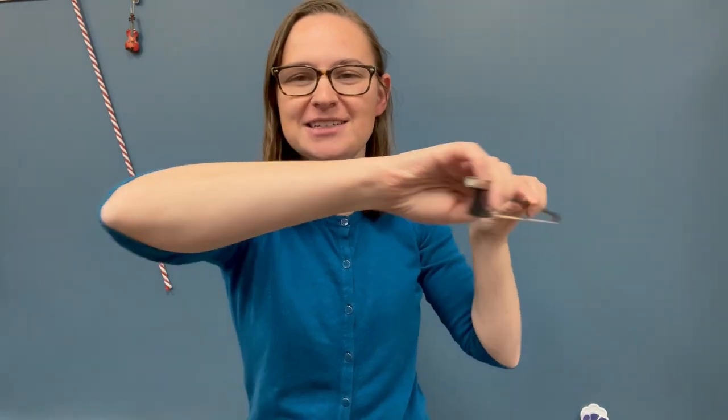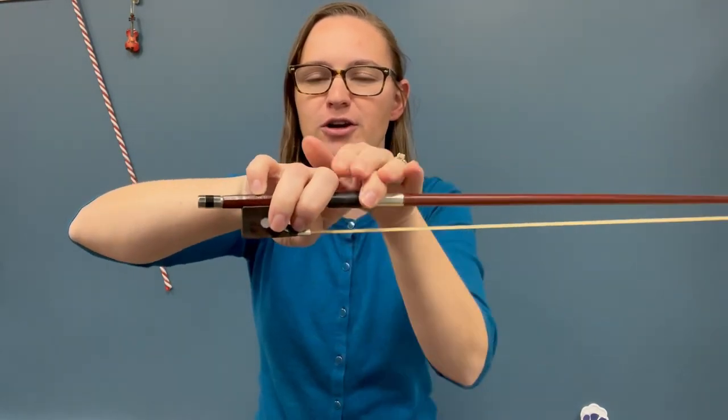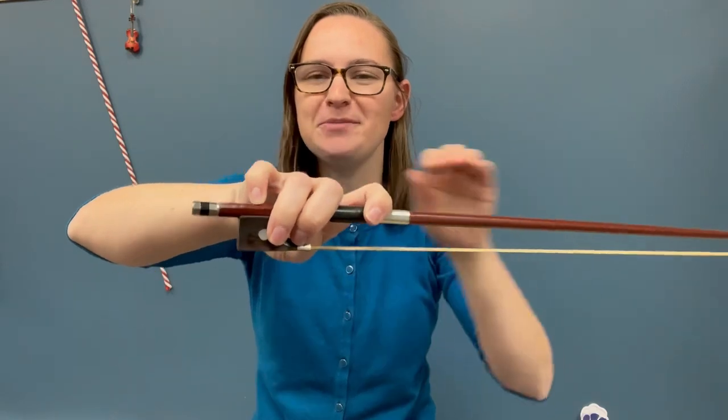My thumb stays bent and my other fingers are curved over, pointer finger curved and separate, pinky perched like a bird on a branch.